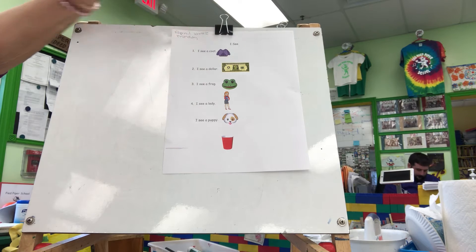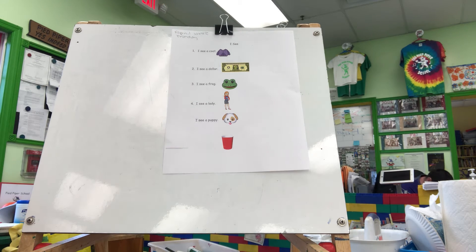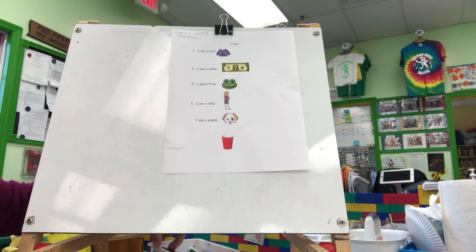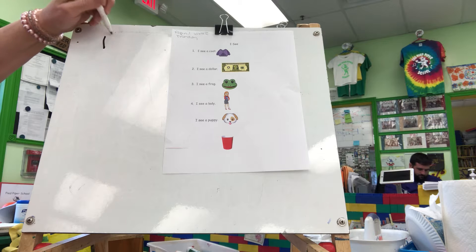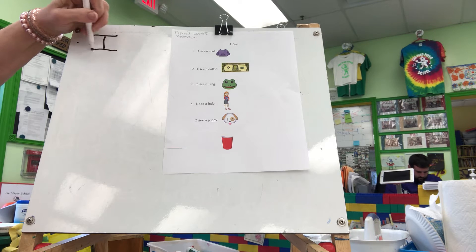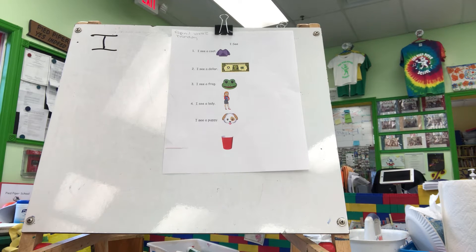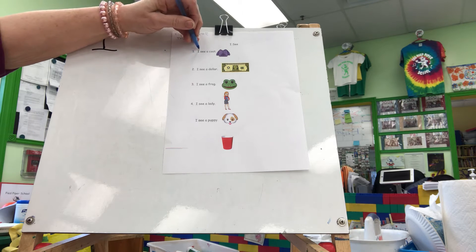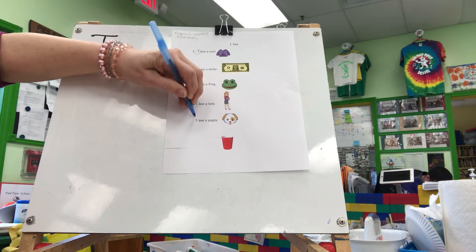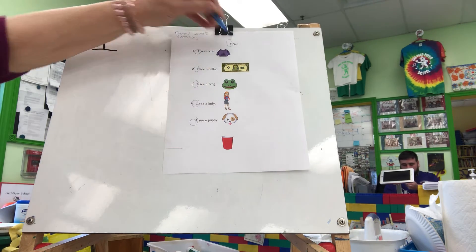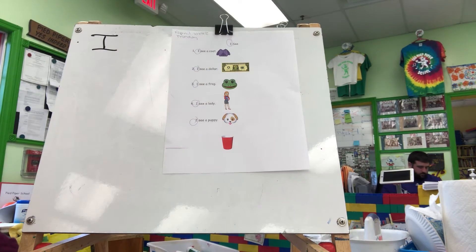Let's take a look and see if we see any of the letters that are also words. Does anybody see a letter that's also a word? Good job. The letter and the word I. It's at the beginning of each of these sentences. Take your pencil and put a ring around the letter and the word I. Oh, it's in the title too. Take your time. Put me on pause and then come back.